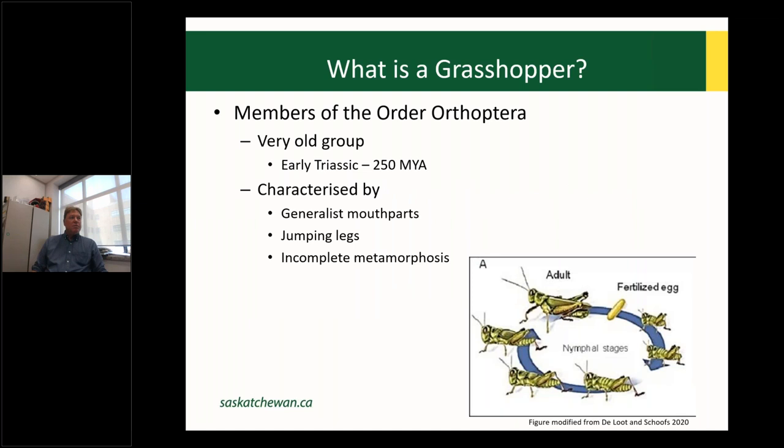A fundamental question: what is a grasshopper? They are members of the order Orthoptera — a very old group. People talk about cockroaches surviving major catastrophic events, but arguably grasshoppers are an older group, about 250 million years old. They're characterized by generalist mouthparts, jumping legs, and incomplete metamorphosis — meaning they don't have larvae, they have nymphs.